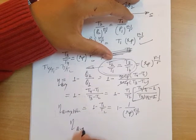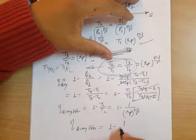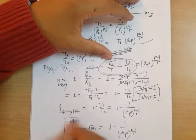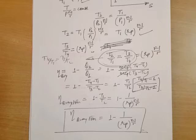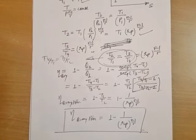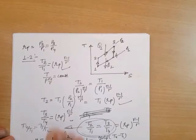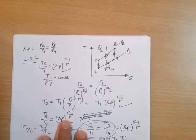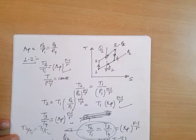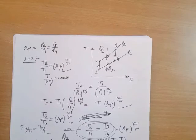This is the efficiency of the air-standard Brayton cycle: η = 1 - 1/RP^((γ-1)/γ). There are many ways to improve this efficiency, and one very effective method is regeneration. With the help of regeneration, we can significantly improve the efficiency of the Brayton cycle.